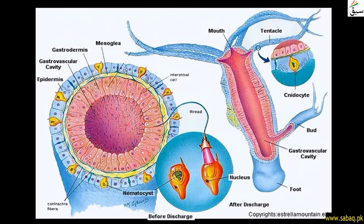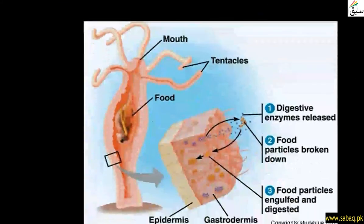Hydra has a large surface area to volume ratio. Because of this, exchange of materials can happen through diffusion. The outer layer — the ectoderm — is in contact with water, so exchange of gases such as oxygen and carbon dioxide can also occur through diffusion.